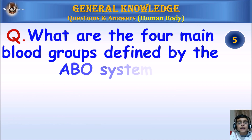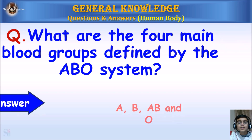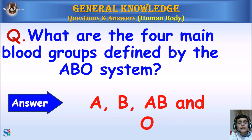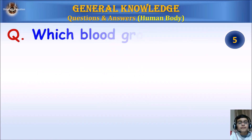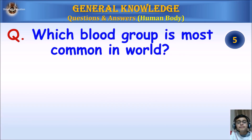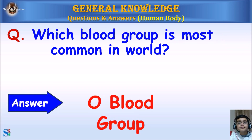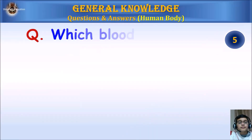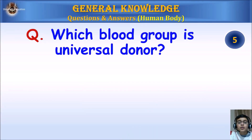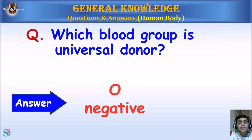What are the four main blood groups defined by the ABO system? Answer: A, B, AB, and O. Which blood group is the most common in the world? Answer: O blood group. Which blood group is the universal donor? Answer: O negative.